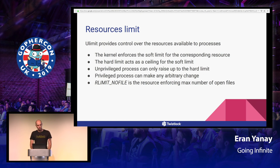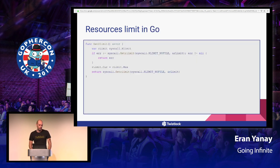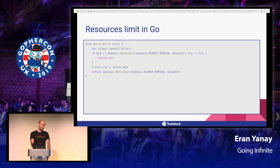The specific resource that is interesting to us is RLimit_NOFILE, which stands for number of open files, and it enforces the maximum number of open files. We can change it using ulimit, but we can also change it directly in Go. There are two important syscalls: getrlimit, which fetches the resource limitations per resource, and setrlimit. In this example, I first call getrlimit to get the current limitations, then I raise the current (soft limit) and set it to the max (hard limit), and then I call setrlimit to make the change.